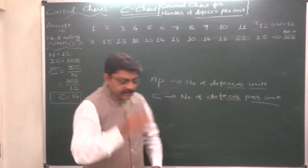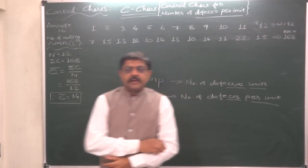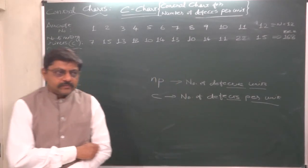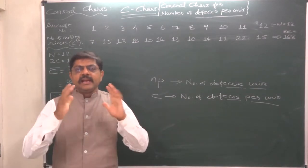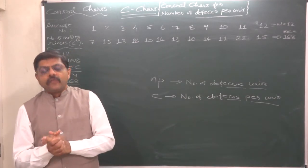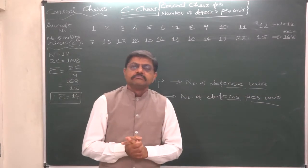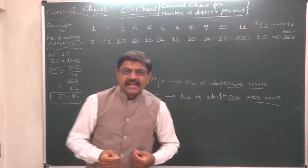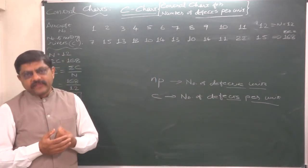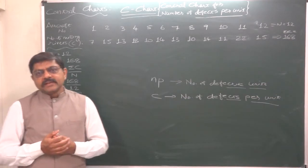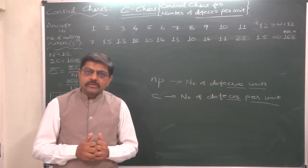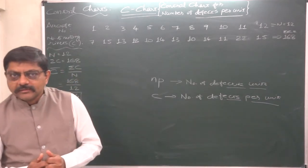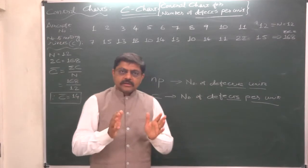Take another example: a piece of glass of certain measurement, certain dimension—say 8 by 4 feet. Scratches on that glass sheet can be considered as defect. We have to inspect each and every such kind of glass piece and count the number of scratches.